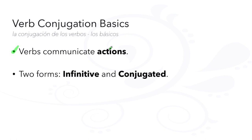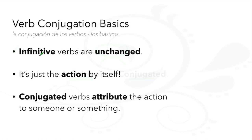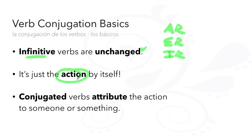Verbs are words that communicate action and have two forms: infinitive and conjugated. Infinitive verbs are unchanged — they still have an AR, ER, or IR ending — just talking about the action by itself. For example: to run, to study, to eat.